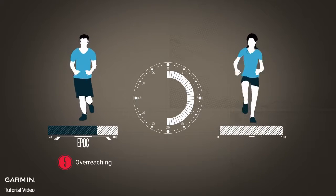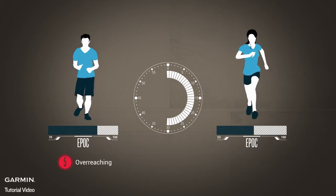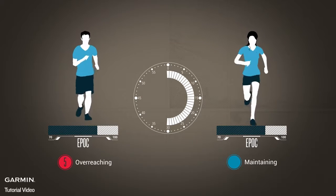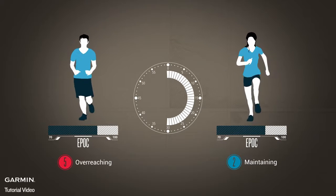However, an elite level runner could complete the same half-hour run at the same relative intensity while still producing an EPOC of about 70. This would result in a training effect of about 2, which is only maintaining for that athlete.